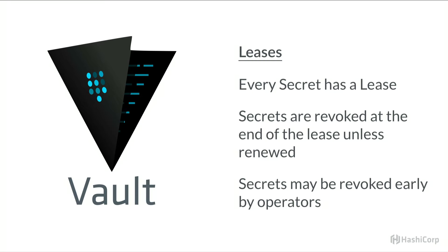Every secret is returned with a lease, which binds the lifetime during which that secret is valid — it's an API contract that Vault provides. If the secret is not renewed, Vault will automatically revoke it. In the case of that dynamic secret, if the token isn't renewed and we've leaked it, once we hit our expiration date, Vault reaches out to Postgres and deletes that username and password — meaning we don't have an infinite breach. Secrets can also be revoked early by operators, defining a well-defined break glass procedure: look in audit logs, figure out what applications had access, and revoke all the secrets.